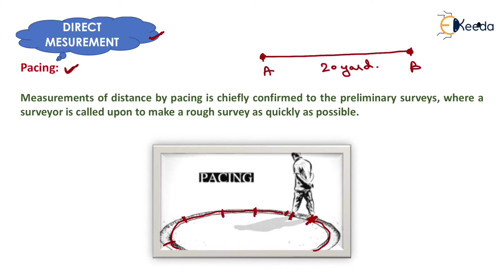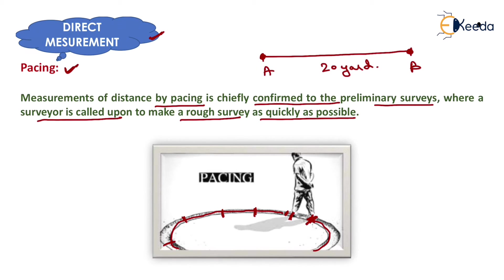The measurement of distance by pacing is chiefly confined to preliminary surveys where a surveyor is called upon to make a rough survey as quickly as possible. It provides approximate data. That is all about direct measurement. Thank you very much, students.